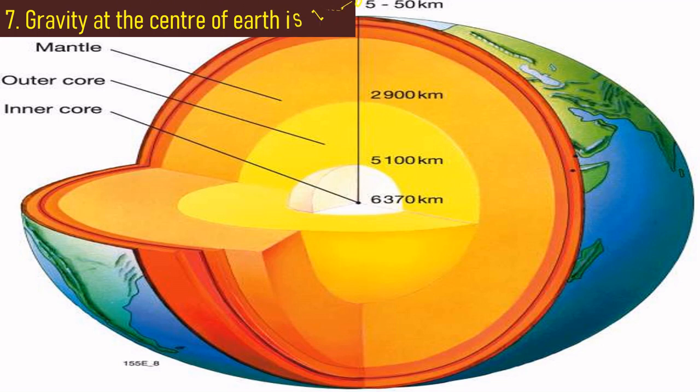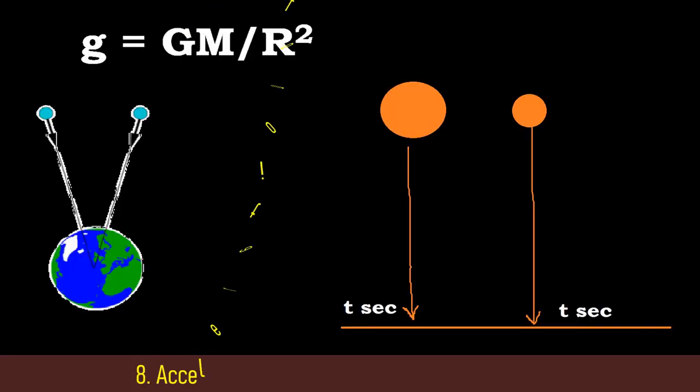Fact number seven: if we move inside the Earth's surface, the gravity decreases and becomes zero at the center of Earth.